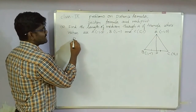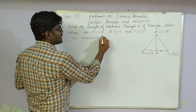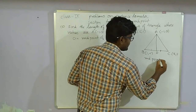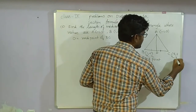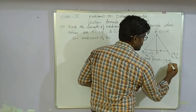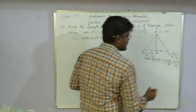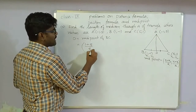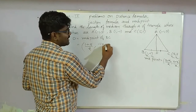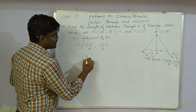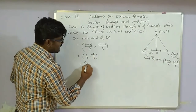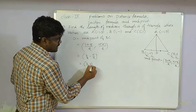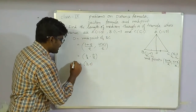Midpoint D of BC: using midpoint formula (x1+x2)/2, (y1+y2)/2. B is (1,-1) and C is (5,1). D = ((1+5)/2, (-1+1)/2) = (6/2, 0/2) = (3, 0).